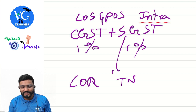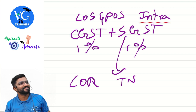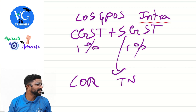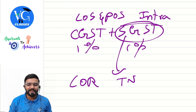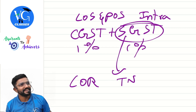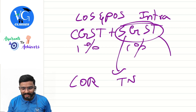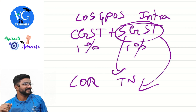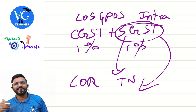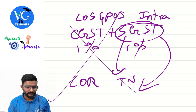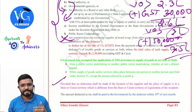For example, I cannot give SGST of Karnataka to Tamil Nadu's state government — giving credit becomes impossible and will lead to conflict between governments. So in this case, no TDS. The amount deducted as tax shall be paid to the government by the deductor within the 10th of the next month, and he also has to file GSTR-7.